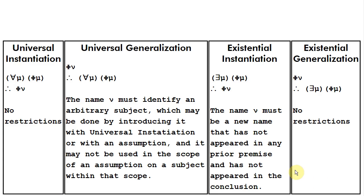So we've just learned about existential instantiation and existential generalization. There is a restriction on existential instantiation: whenever we go from an existential statement to a particular statement, the name we replace the bound variable with must be a new name that has not appeared in any prior premise and has not appeared in the conclusion. But with existential generalization — going from a particular statement to an existential statement — there are no restrictions.